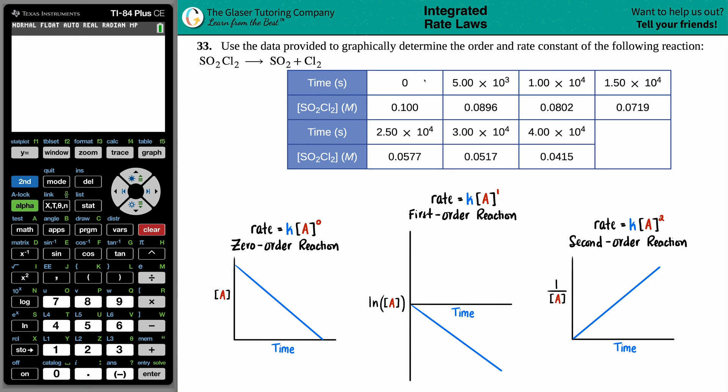Number 33. Use the data provided to graphically determine the order and the rate constant of the following reaction. And then we have SO2Cl2 yields SO2 plus Cl2. And then we have a beautiful data chart here in which we have time versus concentration. Brackets always mean concentration, which is molarity.